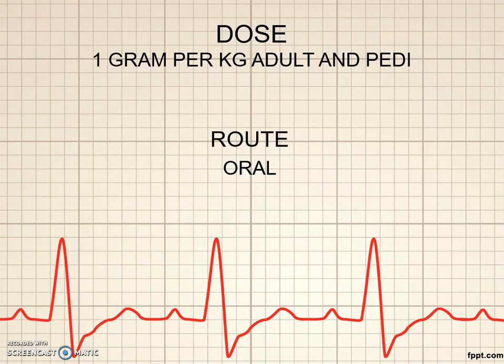This is one of the few medications where the adult and the pediatric dose is the same, and that is one gram per kilogram. Take their weight in pounds, divide by 2.2 — or cut it in half and take 10 percent — and for every one kilogram they get one gram. For an average adult who weighs around 200 pounds, that's about 90 to 99 kilos. Your typical dose is actually going to be two of the containers. These are supplied usually in 50 grams per bottle, so for your average adult it is not uncommon to have to drink an entire bottle, a second bottle, and sometimes even more of a third bottle.